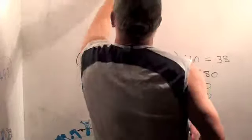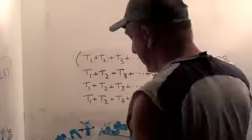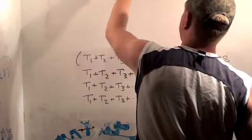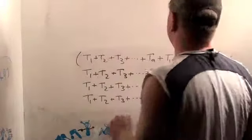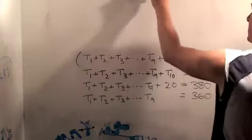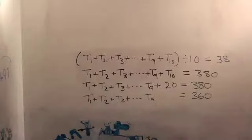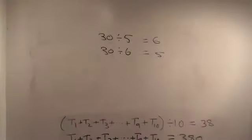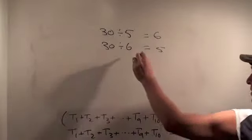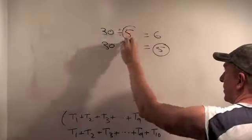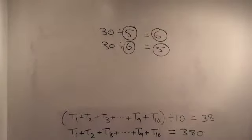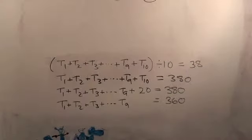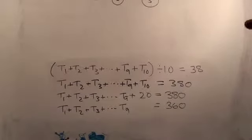When you divide by a big number, you get a small number, and when you divide by a smaller number, you get a bigger number. For example, thirty divided by five equals six, and thirty divided by six equals five. So three hundred and sixty divided by ten equals thirty-six, and we know three hundred and sixty divided by nine is going to be bigger than thirty-six.